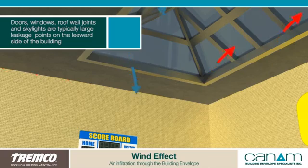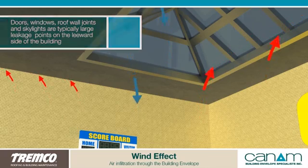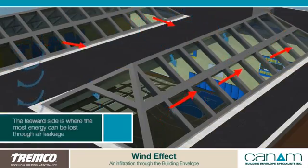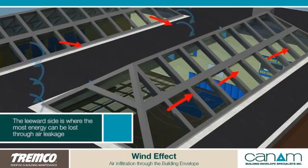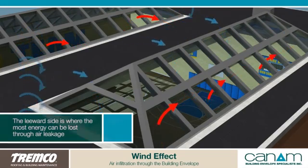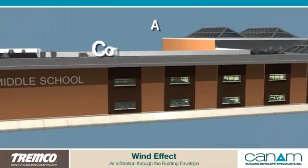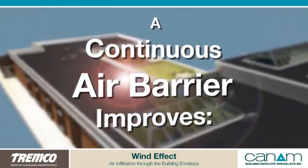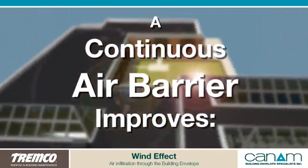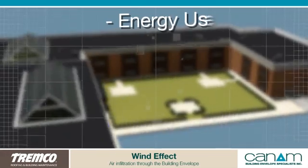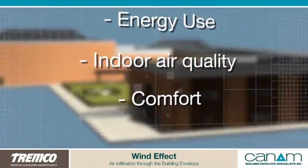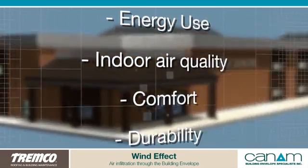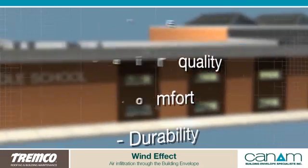These are typically the largest leakage points on the leeward side of a building, and as you would expect, the leeward side is where the most energy could be lost through air leakage. A continuous air barrier solves the problem of wind effect, with results that include improved energy use and indoor air quality, improved occupant comfort, and greater durability of building components.